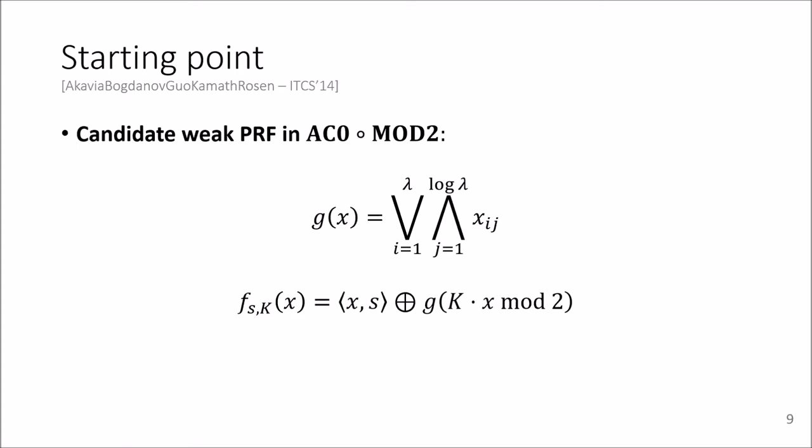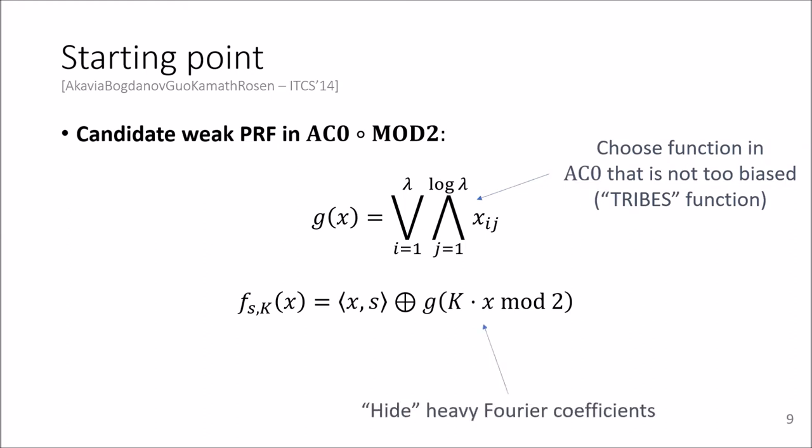As I mentioned before, we're not the first who consider this question. So let's take a look at the candidate construction from 2014. So on the slide, you see the weak PRF here with keys S and K. And the design paradigm is as follows. G is chosen such that it is a function in AC0 that is not too biased, so it has constant bias and it's also called the drives function.